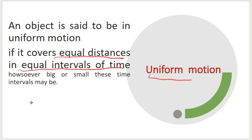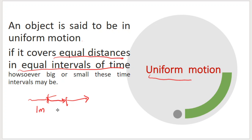For example, if you are travelling by car and consider a time interval of 1 second — for each second, measure the distance covered. If the car covers 1 meter per second consistently, it is covering equal distance in equal time, and that is known as uniform motion.